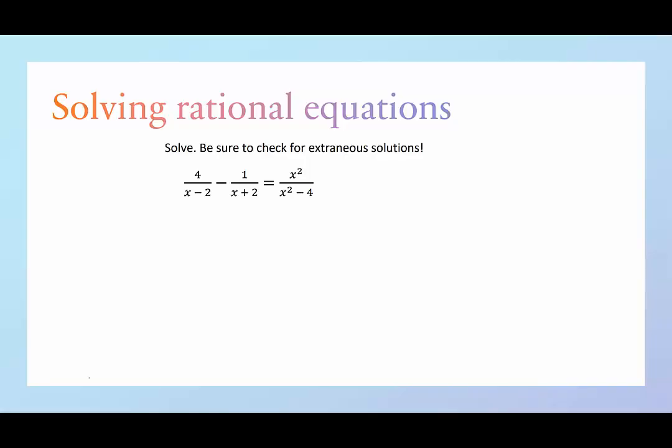So we have 4 over x minus 2 minus 1 over x plus 2 equals x squared over x squared minus 4.